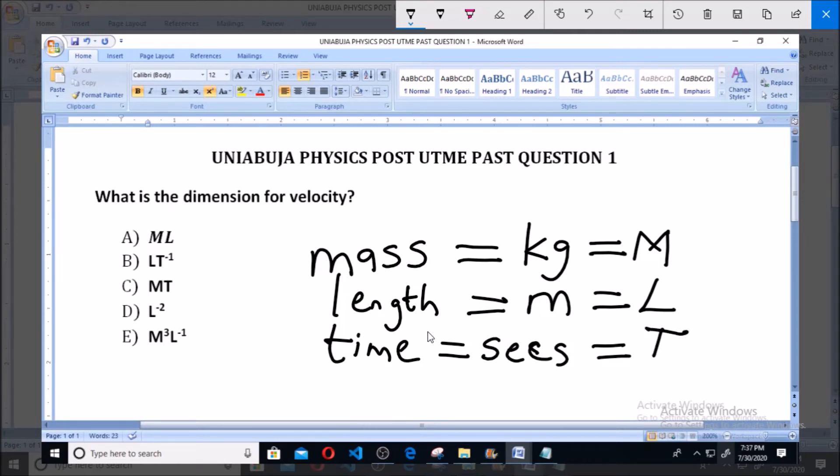So, having established the dimensions of the basic quantities that pretty much make up the units of every quantity, or comprise every other quantity, we can proceed to find the dimension for velocity by obtaining the unit of velocity, and the unit of velocity basically can be obtained from its formula.